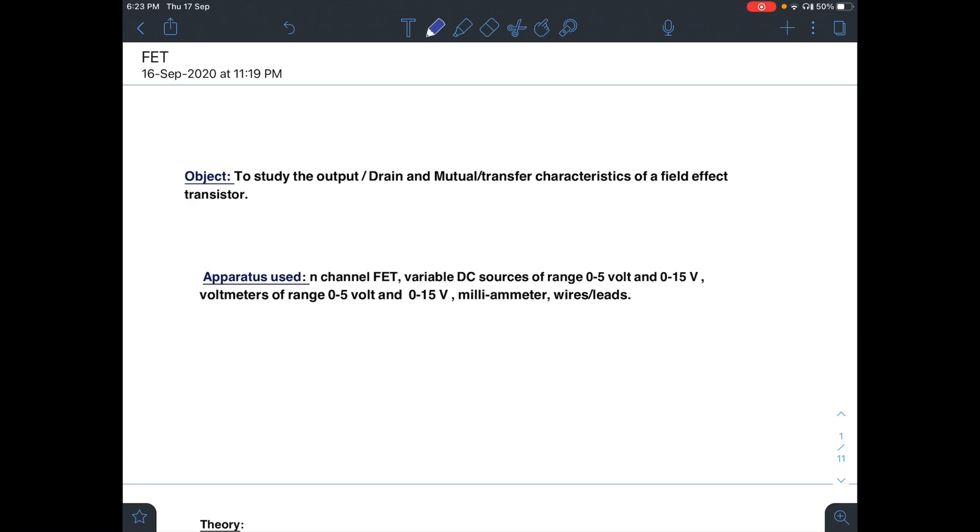The apparatus you will be using includes an n-channel FET, DC sources of 5V and 0 to 15V or 0 to 25V depending on the characteristics of the field effect transistor, voltmeters ranging from 0 to 5V and 0 to 15V, milliammeter, and wires or leads.